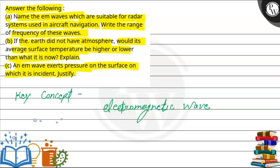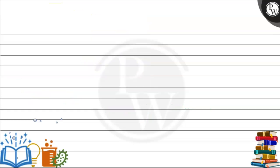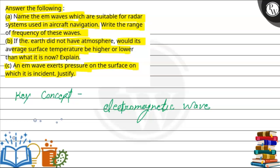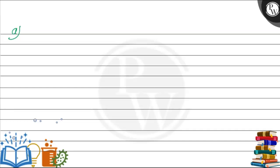We have three questions to solve. Let's first look at Part A. Part A asks which EM wave — that is, which electromagnetic wave — is suitable for the radar system. The answer is microwaves. Microwaves are used for the radar system.